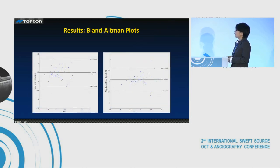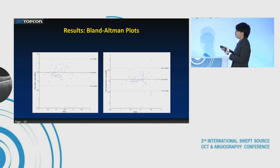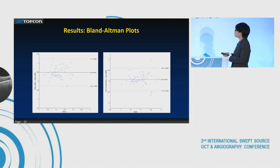The Bland-Altman plots: on the left, it shows the difference between Trident BMO and Cirrus BMO, and on the right, it shows the difference between Trident scleral ring and Cirrus BMO. The right plot shows a smaller difference.